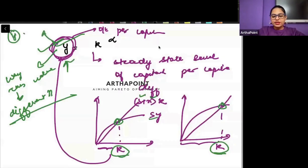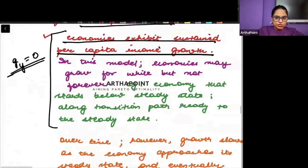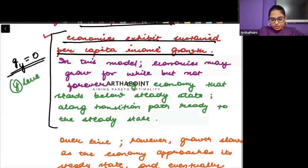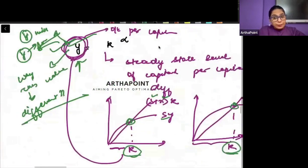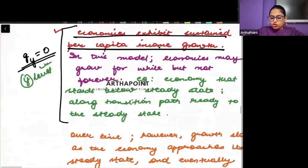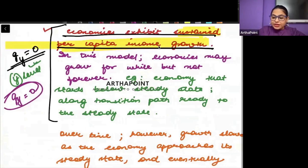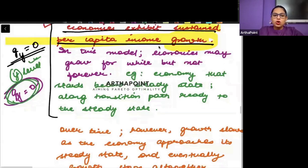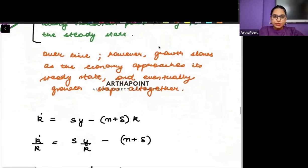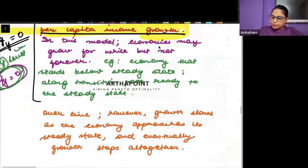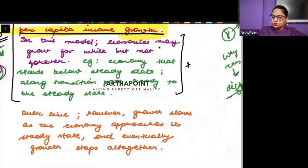Economies with high small y are rich countries; those with low small y are poor countries. This much is clear. But this model also tells us that the growth of small y should be zero — there should be no growth rate. The next question we need to answer is: why do economies have sustained per capita income growth? Why is small y growing in countries? This is something the model is not able to answer, however we will be able to answer that part once we include the concept of technology.